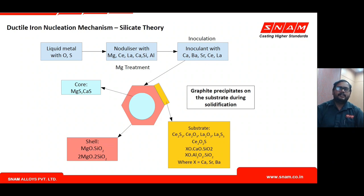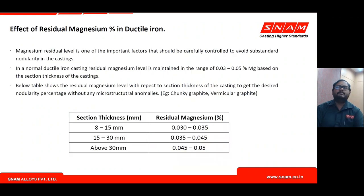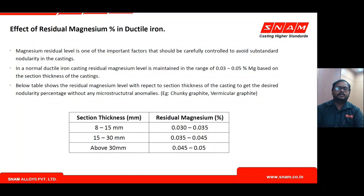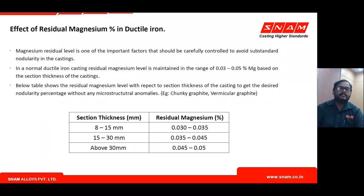Regarding residual magnesium: because magnesium is volatile, it loses potency or boils off during the treatment and pouring process. Only some magnesium remains after these losses — this is called residual magnesium. Residual magnesium determines the quality of ductile iron to a significant extent.